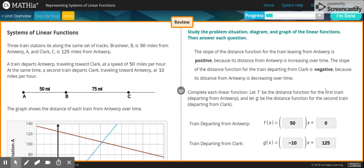So then over here, it's 50 because that's the speed that it's traveling towards Clark. So that means that it's positive. And then when it starts at Antwerp, it's zero miles from there.